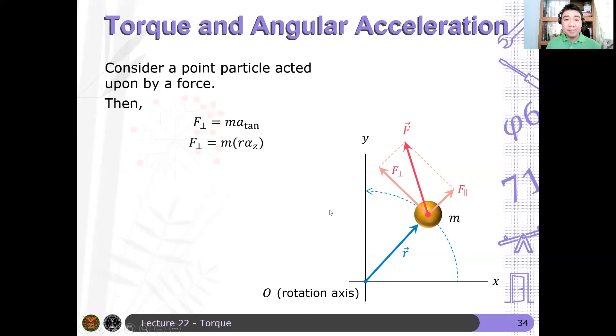So if we multiply both sides of this equation by r, so multiplying both sides by r, ang lalabas ay F_perpendicular times r is m r squared alpha z. Diba? So nag-multiply lang ako both sides ng r dyan.